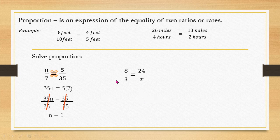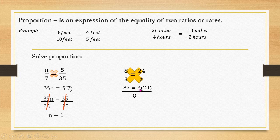In another example, the unknown variable x is in the right-side denominator. We cross multiply to get 8x = 3 times 24. Divide both sides by 8; since 24 equals 8 times 3, the 8s cancel, leaving 3 times 3. So x = 9.